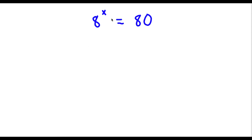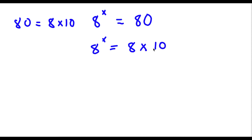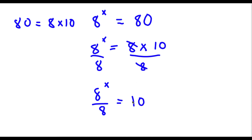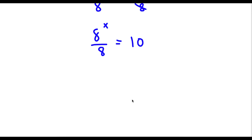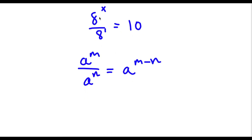Alright, so I have 8 to the power of x is equal to 80. Now 80 is the same thing as 8 times 10, so I'm going to replace 80 with 8 times 10. So now I have 8 to the power of x is equal to 8 times 10. Now I can go ahead and divide both sides by 8, so I have 8 to the power of x over 8 is equal to 10. Now 8 is the same thing as 8 to the power of 1, and using the rule a to the power of m over a to the power of n equals a to the power of m minus n, so 8^x over 8^1 equals 8 to the power of x minus 1, which is equal to 10.